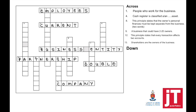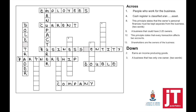Looking at all the questions down. Question number two: earns an income for producing goods — this is called a manufacturing business. It's a different type of business. Question number three: a business that only has one owner, and again we're using two words to answer this question. This forms part of forms of ownership — a business that only has one owner is called a sole trader.